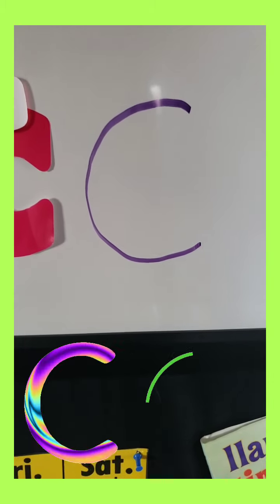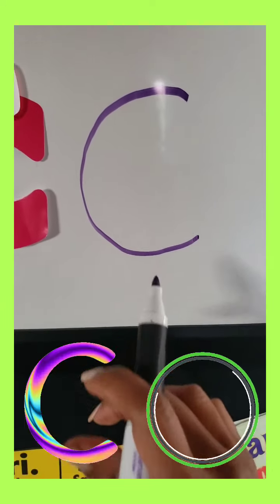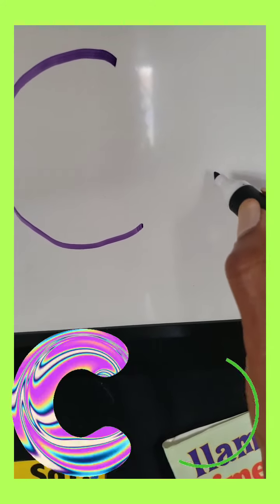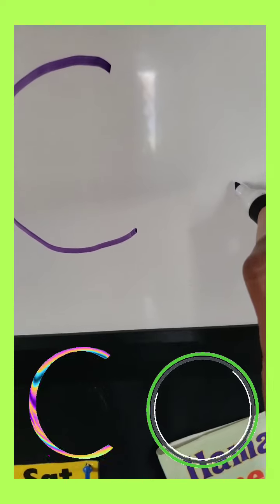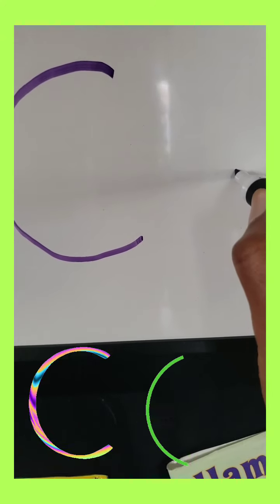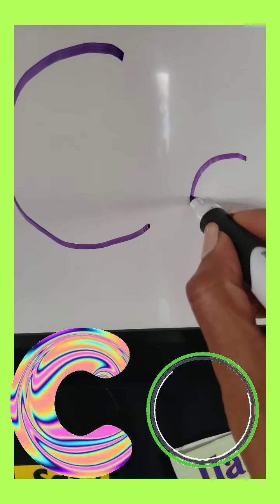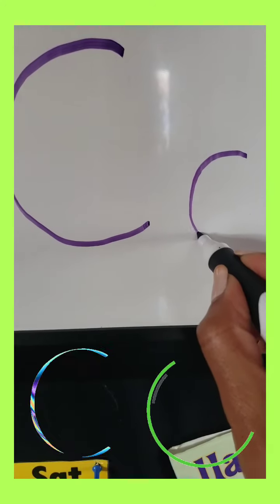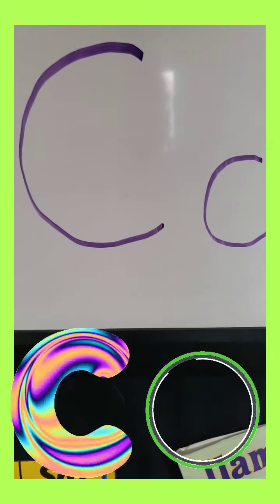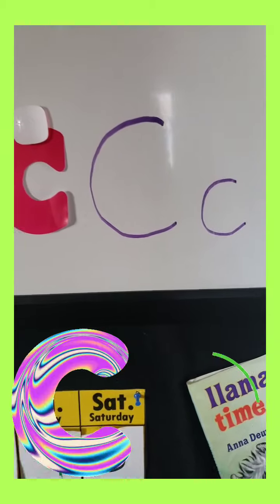And guess what? Little C is just like big C, except you just make the C smaller. Put your marker on the paper and you go around as if you're about to do a circle, and then stop. And there is C.